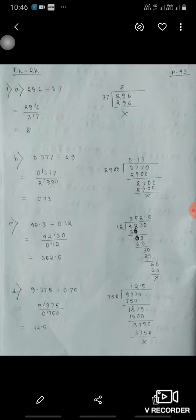Now here 29.6 divided by 3.7. In this, firstly we will remove the decimal. So for removing decimal, see in denominator the decimal is just before one number. We will multiply it by 10 in numerator and denominator. So 296 divided by 37 that will be equal to 8.